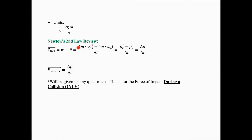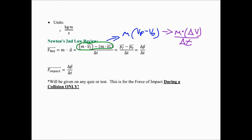Up here on the top we have mass times final velocity minus mass times initial velocity. I could factor the mass out, giving mass times (final velocity minus initial velocity). Since final minus initial is the change in something, that's mass times the change in velocity. So we've got mass times the change in velocity on top and the change in time on the bottom — and we know that change in velocity divided by change in time is acceleration.